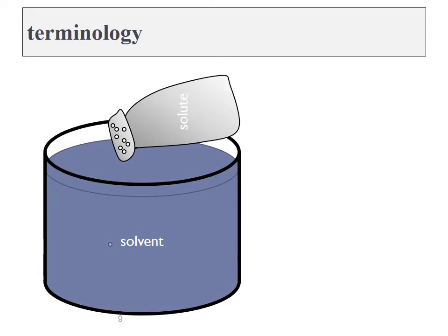At some point, the solvent cannot contain any more solutes, and they will begin to precipitate out of solution. So anything that does not dissolve is the precipitate.